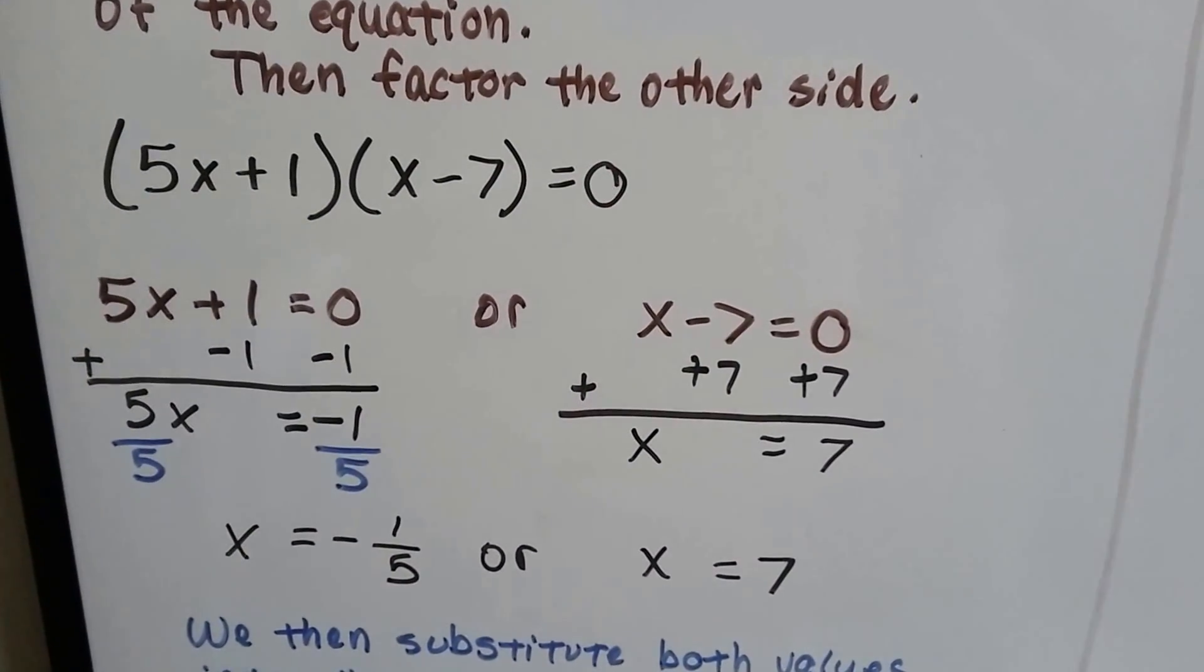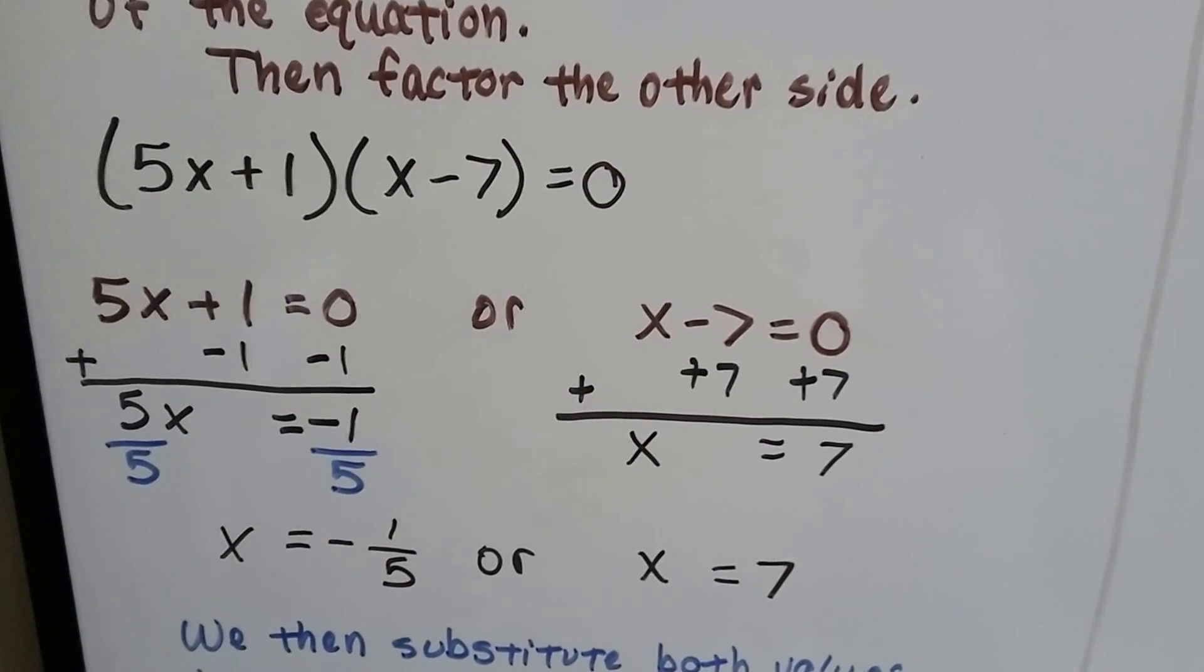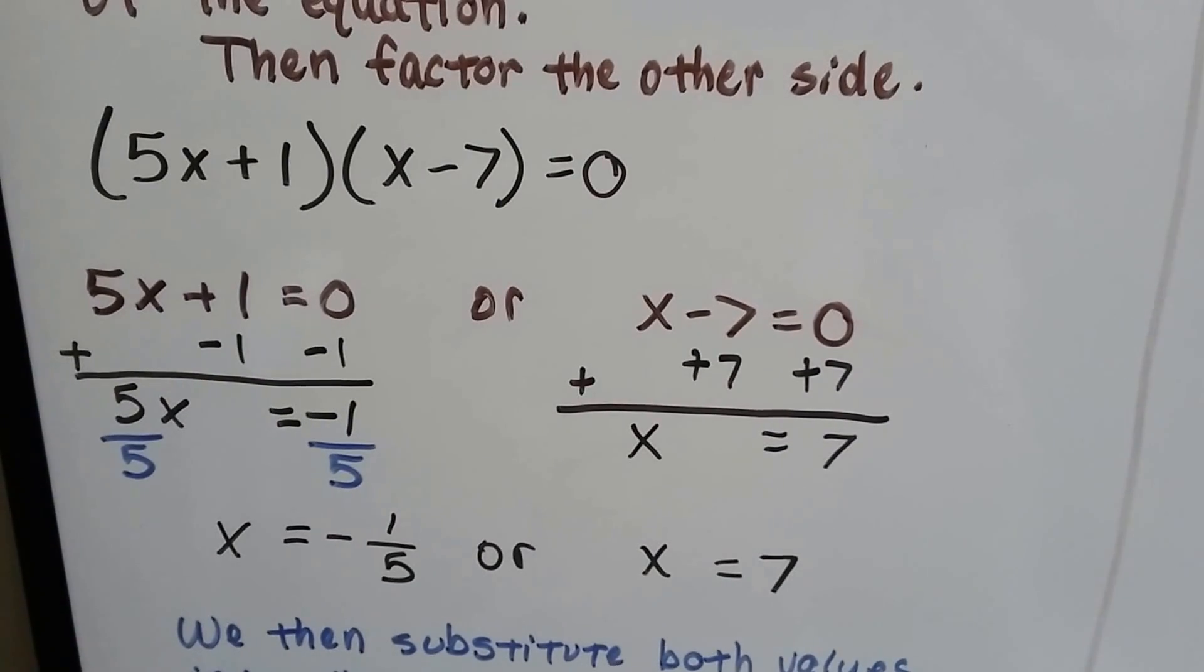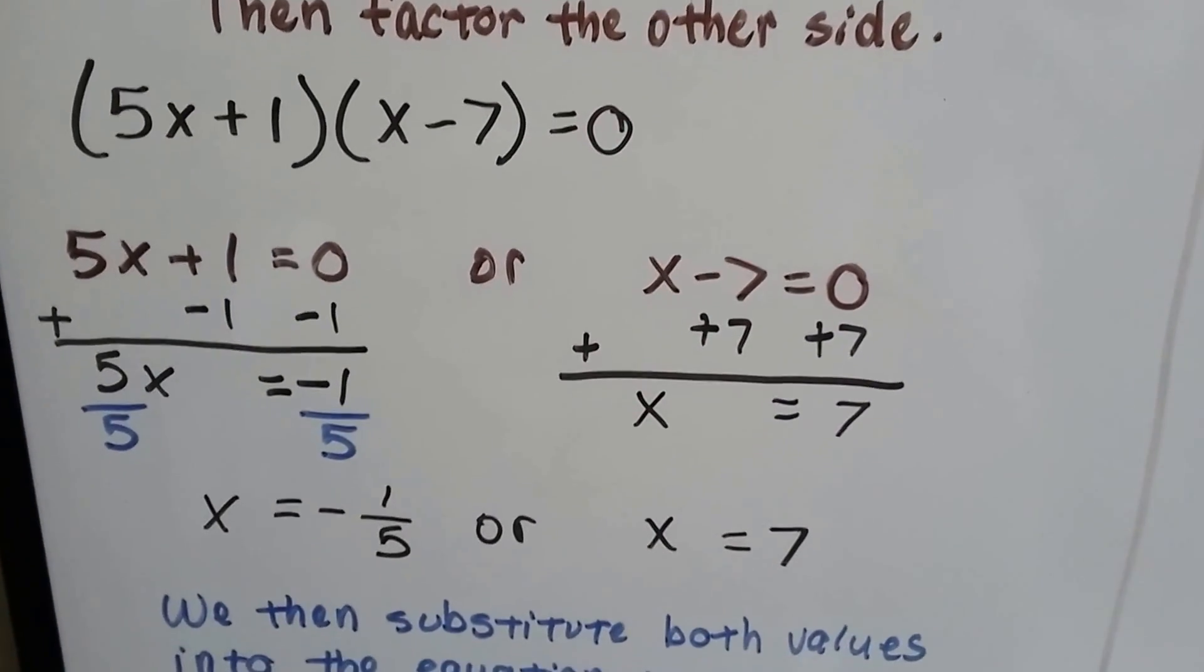Here we have (5x + 1)(x - 7) = 0. We set the 5x + 1 to equal zero and we set the x - 7 to equal zero.